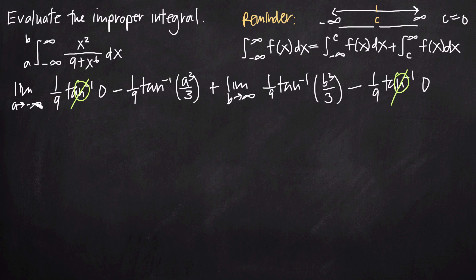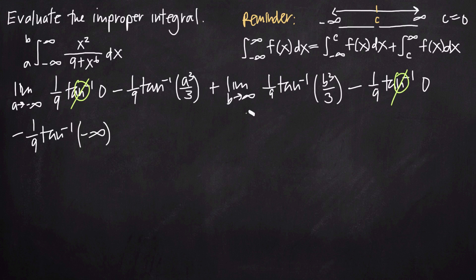Plugging in negative infinity for a: negative infinity cubed is still negative infinity, so we get negative 1 ninth arctan of negative infinity. Plugging in positive infinity for b: positive infinity cubed divided by 3 is still positive infinity, giving plus 1 ninth arctan of positive infinity.